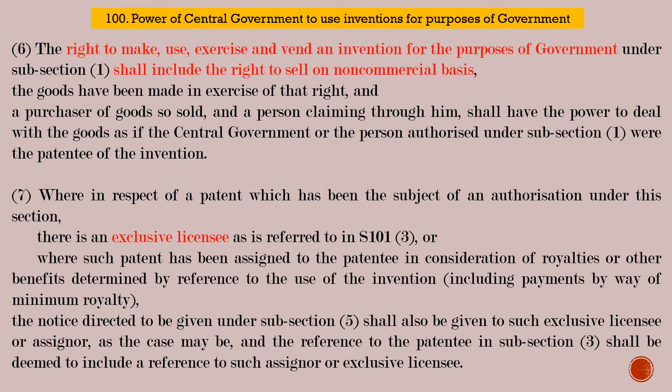Subsection 6: The right to make, use, exercise and vend an invention for the purposes of government also includes the right to sell on a non-commercial basis the goods made in exercise of that right. A purchaser of goods so sold, and any person claiming through him, shall have the power to deal with the goods as if the central government or the authorized person by the central government were the patentee of the invention.